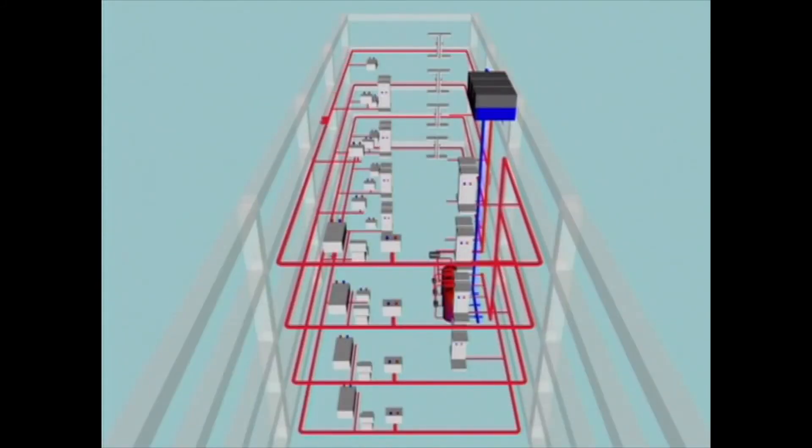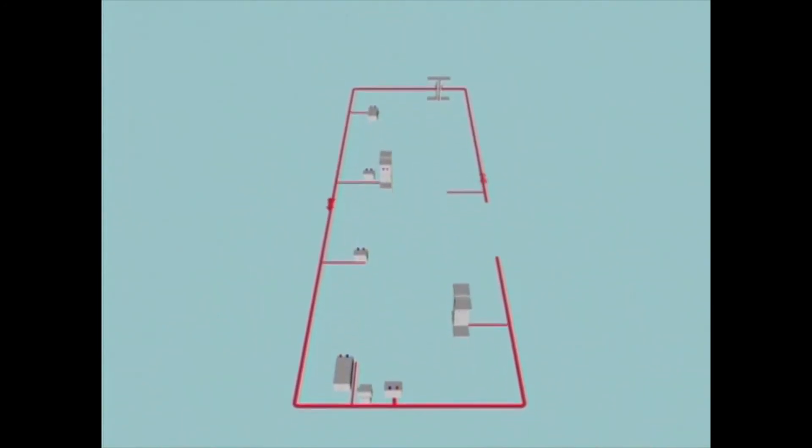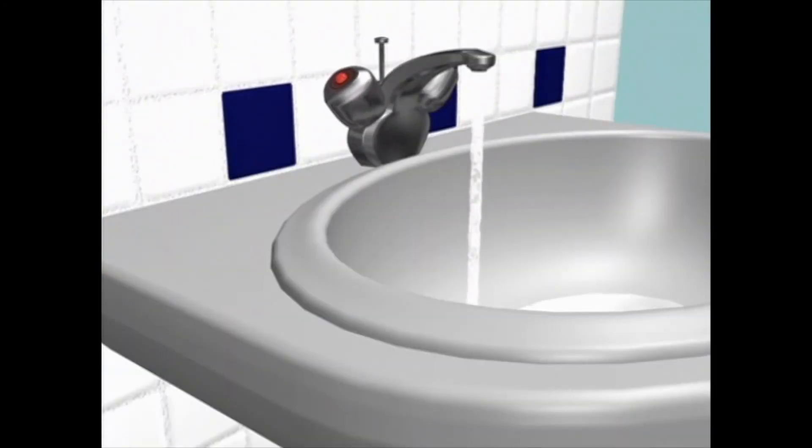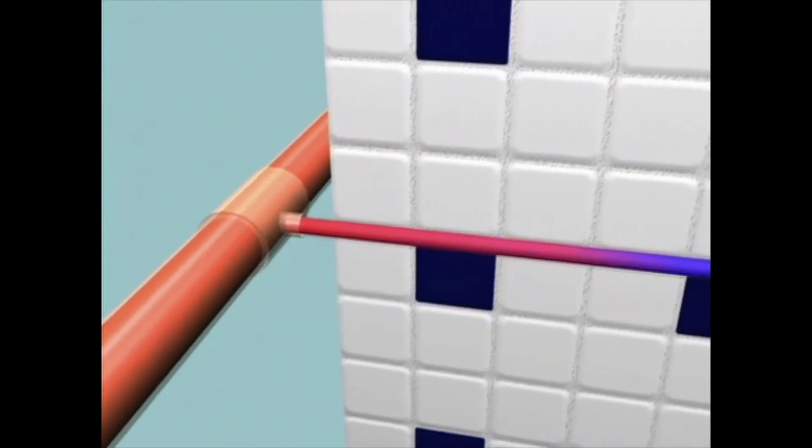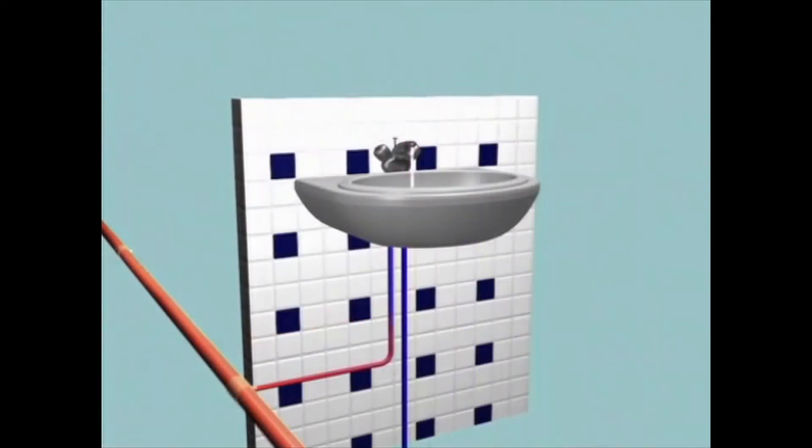There will usually be one loop of the ring main for each floor of the building, with outlets taken off it at various points. The advantage of this system is that when an outlet is turned on, the hot water only has to travel a relatively short distance from the ring main to the fitting. So hot water is available quickly and it is much easier to achieve the control temperatures at the outlet.